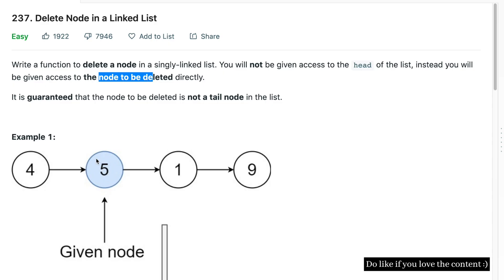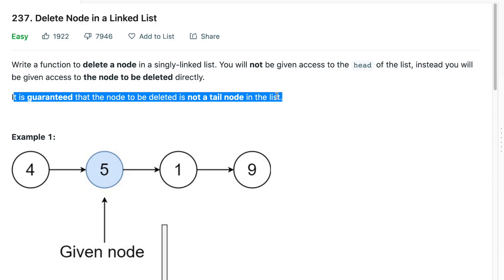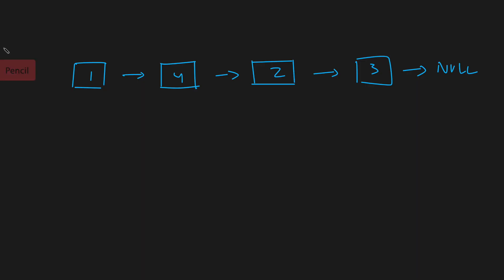Like if you have to delete this fifth node, they will give you node 5, basically the reference. And also they've clearly mentioned that the node to be deleted will never be a tail node. So for example, just imagine they say you have to delete this node and they have given a reference to this node.